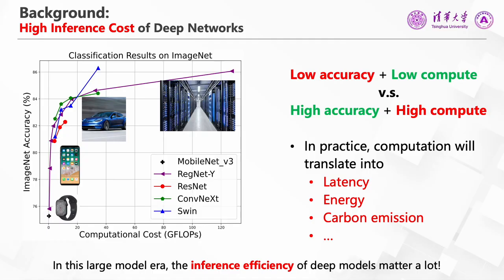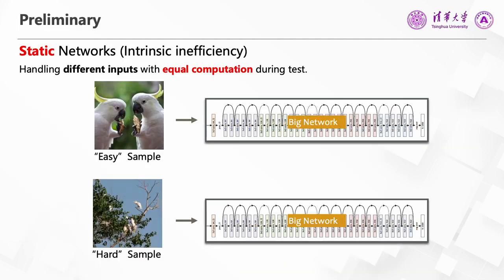In the deep learning era, especially in the upcoming large model era, the high computational cost of deep networks still hinders them from being applied in many resource-constrained scenarios. As a result, people are paying more attention to improving the inference efficiency of deep networks. Although extensive efforts have been made in this direction, such as model pruning and weight quantization, intrinsic inefficiency still exists in commonly used networks, including CNNs and vision transformers. Such inefficiency comes from the static inference paradigm — static models process different inputs with equal computation, overlooking the complexity variance of different samples and leading to considerable redundant computation on easy samples.